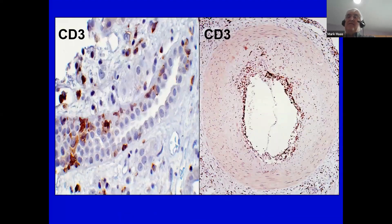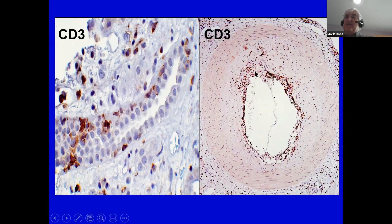Cell-mediated rejection is referred to frequently as T-cell mediated rejection, or TCMR, because the cells involved in the process are primarily T lymphocytes. These T lymphocytes stain with the immunohistochemical marker CD3, and we can see that the cells involved by tubulitis are primarily CD3-positive cells. The same is true for intimal arteritis, although in some cases these T cells are admixed with macrophages.